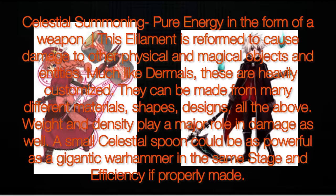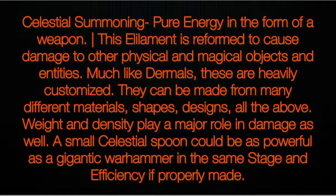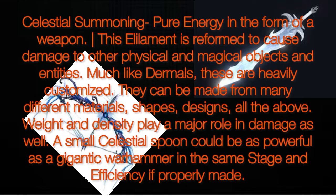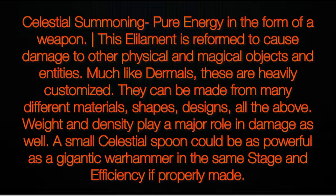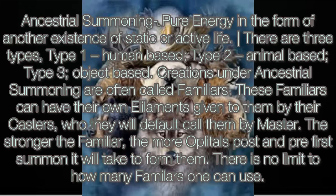Celestial summoning is pure energy in the form of a weapon. This element is reformed to cause damage to other physical and magical objects and entities. Much like dermals, these are heavily customized — they can be made from many different materials, shapes, and designs. Weight and distance play a major role in damage as well. A small celestial spoon could be as powerful as a gigantic warhammer at the same stage and efficiency if properly made.